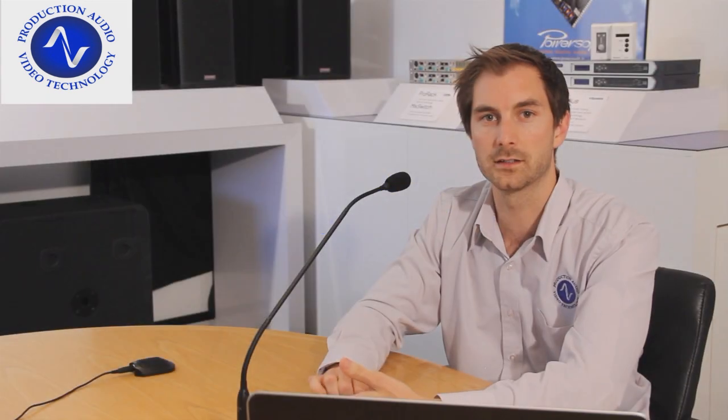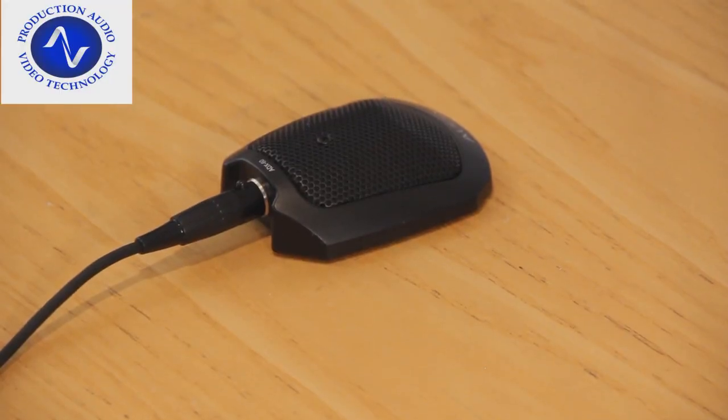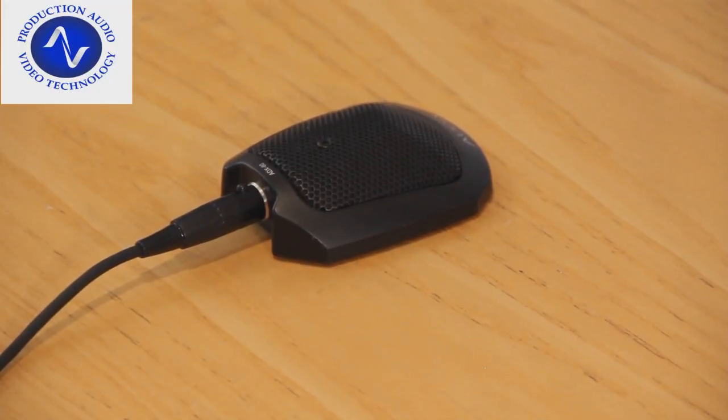The next microphone is an Audix ADX60 boundary type, which you can see to my right. It's intended to be placed on an acoustical boundary surface such as a table. This microphone is also a cardioid directional type, so again preferentially picks up sounds from the front and rejects sounds from the back.